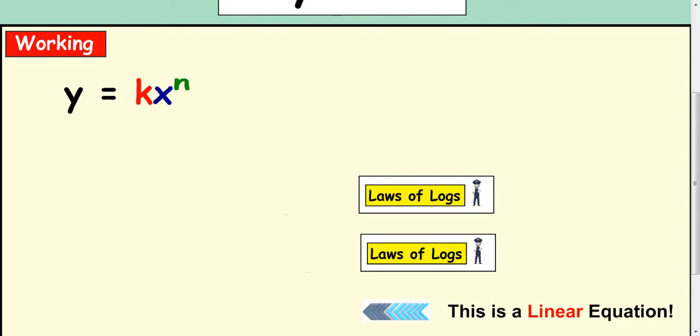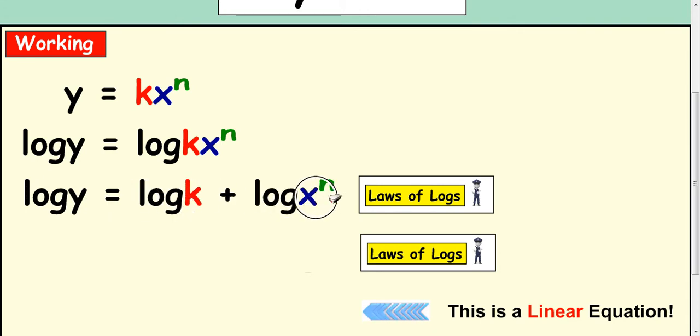So, first thing you do is you take logs of both sides. The next thing that you do is you use your log laws to split this side up. When you multiply k by x to the n, you can rewrite it as log of k plus log x to the n. We're not talking about bases at the moment. We'll go into that later.